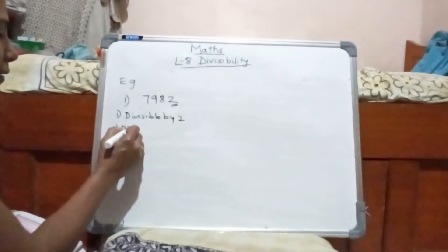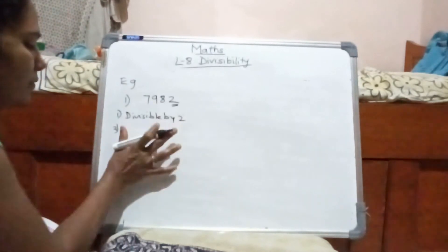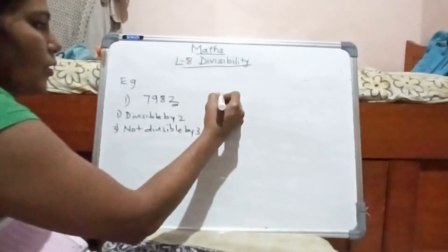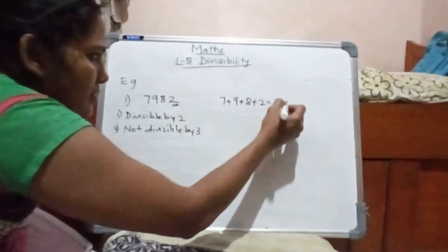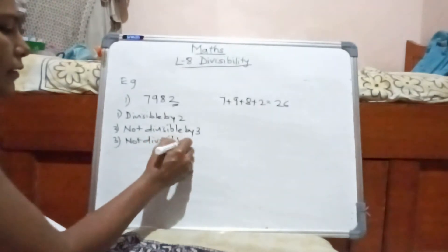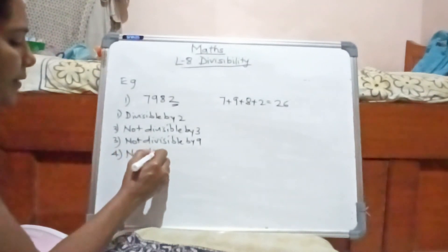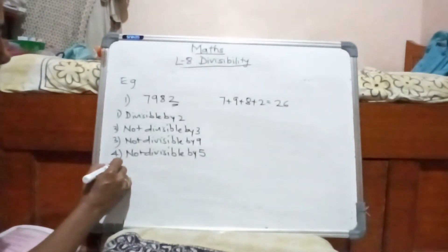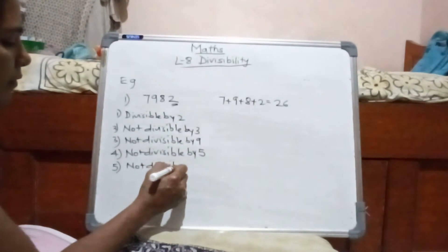26 means it is not divisible by 3, because 7 plus 9 plus 8 plus 2 gives us 26. It is also not divisible by 9, because 26 is not divisible by 9. This number is not divisible by 5 either, and it is also not divisible by 10.